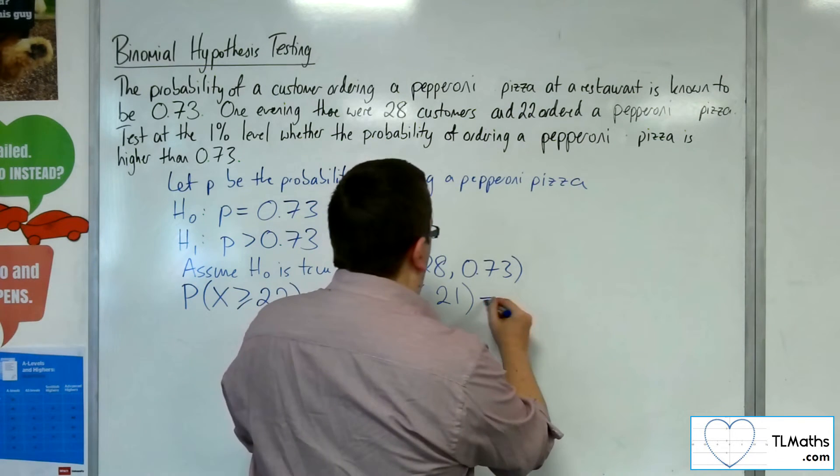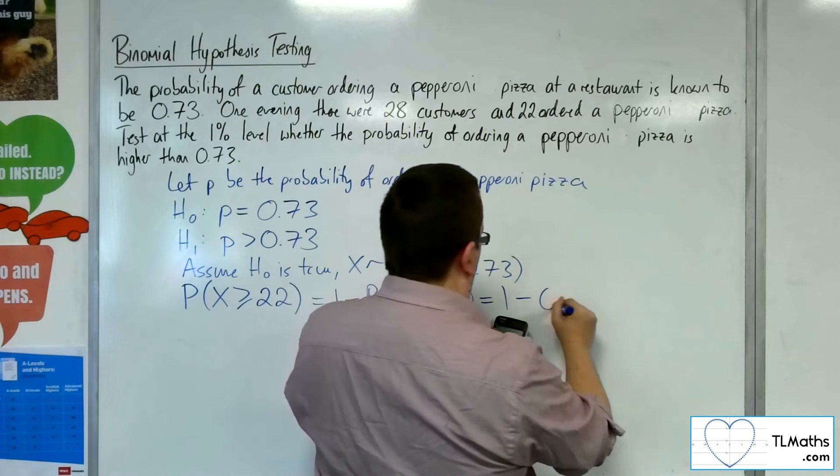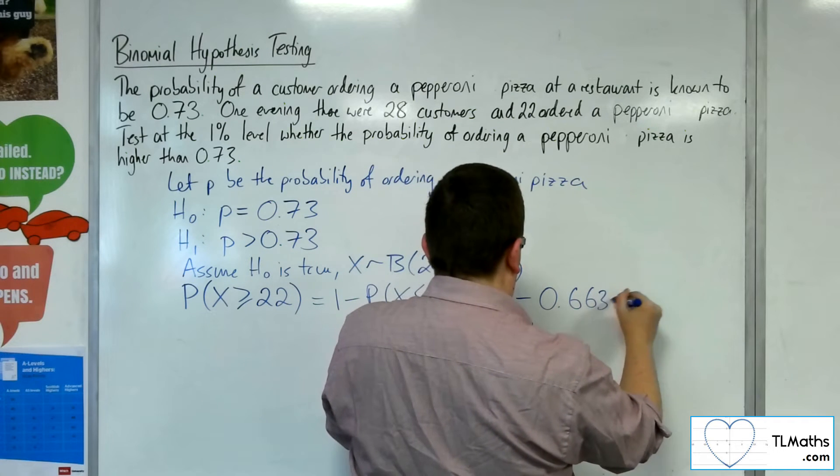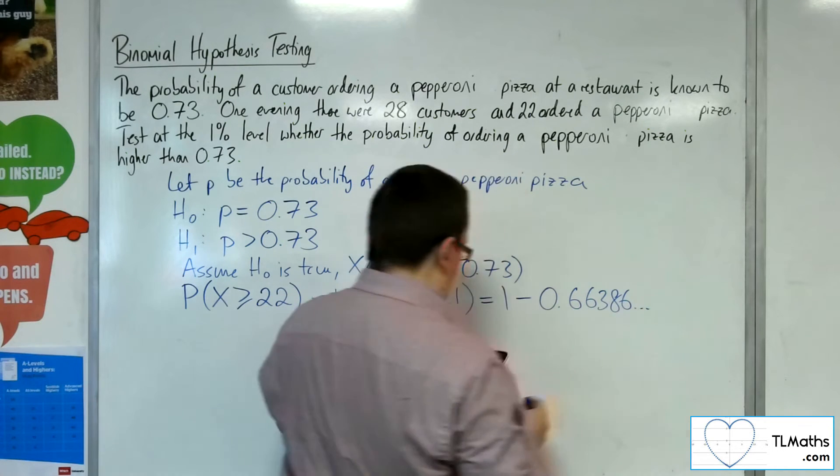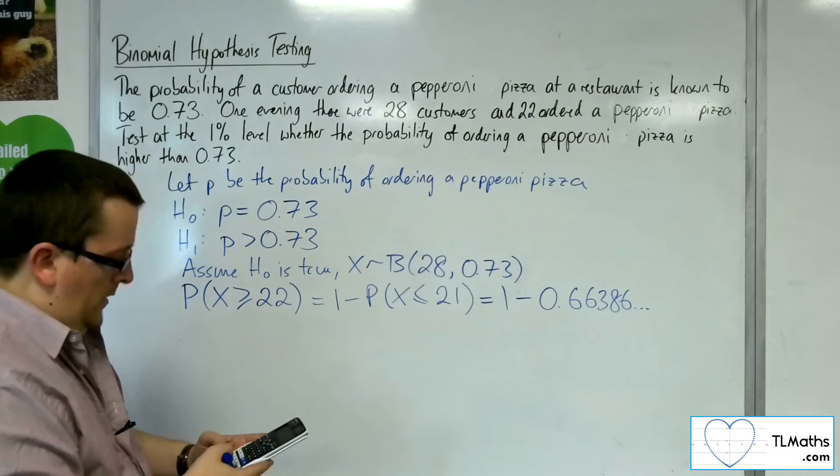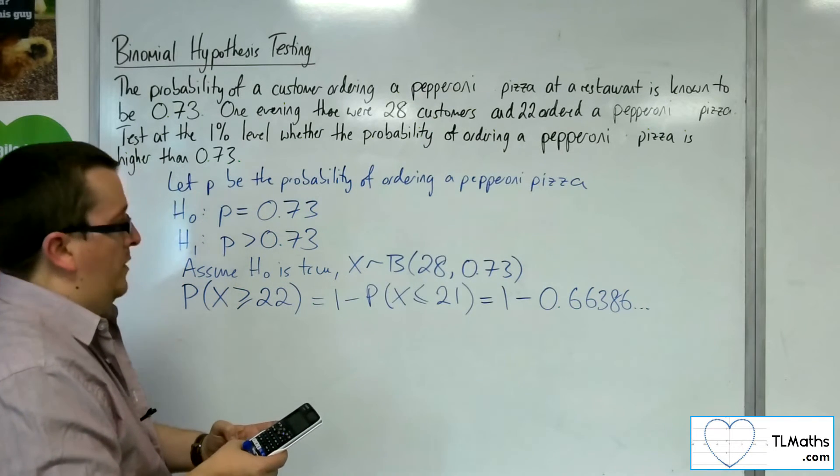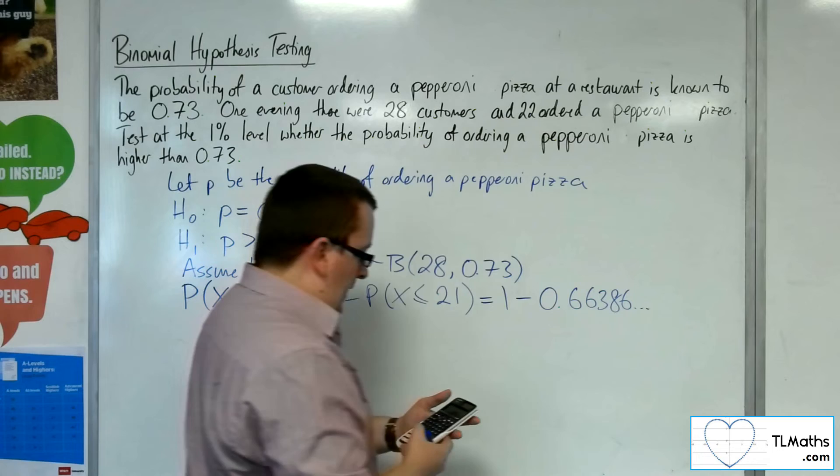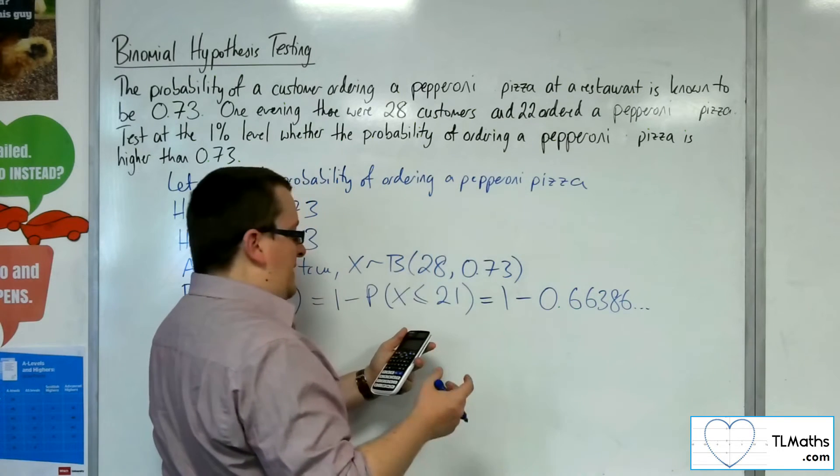We get 1 - 0.66386, which equals 0.3361.